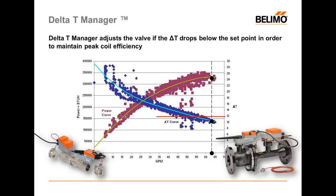With the Delta-T manager in place, we will restrict the flow through that valve. By restricting the flow, we'll drive the Delta-T back higher, but due to the inefficient nature of coils at high flow, we see little or no reduction to the amount of load that can be delivered to this space. So again, we're still achieving around 325,000 BTUs, but we're using significantly less water to do it.